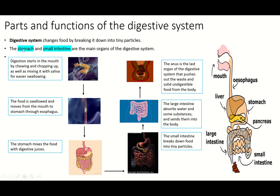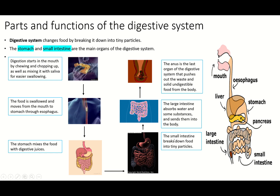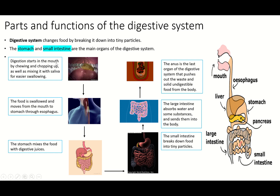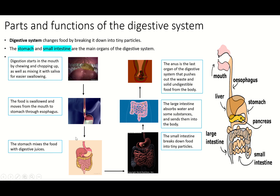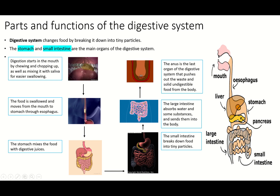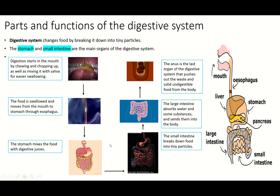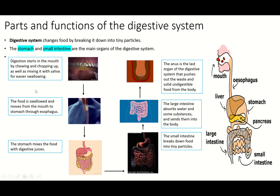These are the parts of the digestive system: mouth, esophagus, stomach, small intestine, large intestine, and anus. The two main organs in the digestive system are the stomach and the small intestine. They are all important, but most of the digestive function is done by these two main organs.